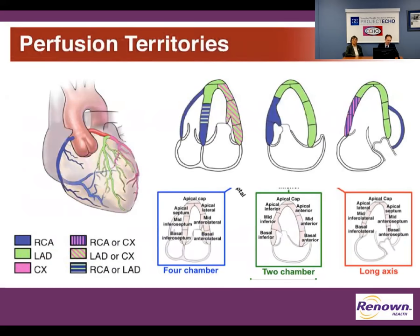I'm going to show a lot of ischemic EKGs today, and related to that we should review perfusion territories. Your LAD is in green. The way I conceptualize it — and the way I tell this to patients — is the mass of the heart is like a football. There are three main arteries that supply blood to it: one goes down the seams, two go around the sides. Going down the seams is the left anterior descending coronary artery, the LAD, which has branches — diagonals and septal perforators.